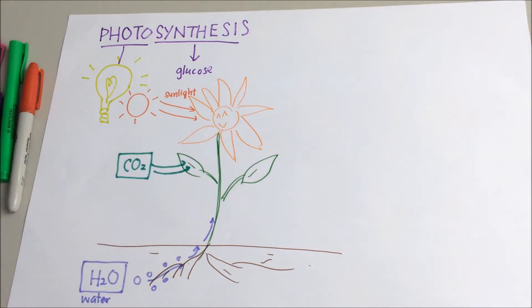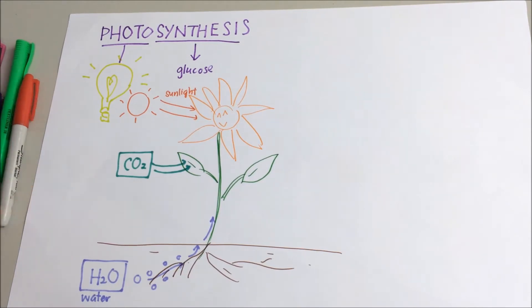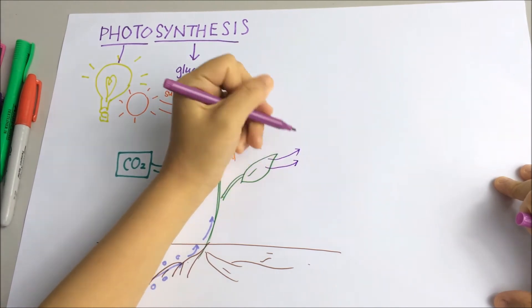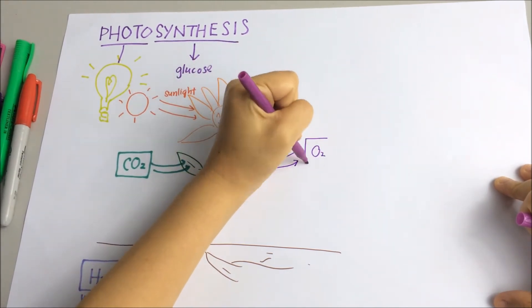This energy will then be used to break up the water molecules and then to bond the hydrogen and carbon dioxide to form glucose and oxygen as a waste product.